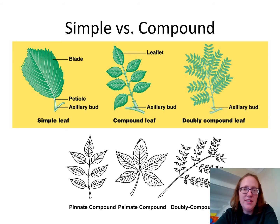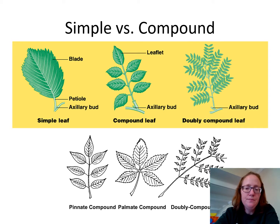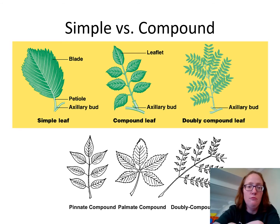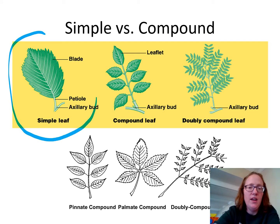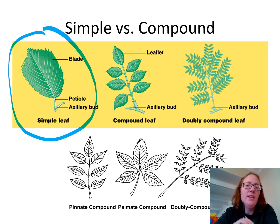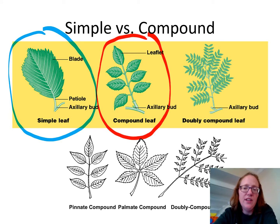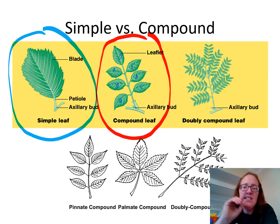The next characteristic you need to understand is whether the leaf is simple or compound. A simple leaf is what you probably drew as a cartoon picture of a leaf growing up — it has one leaflet per leaf. A compound leaf is when it has multiple leaflets per leaf, and each of those leaflets is separate but together they make one leaf.